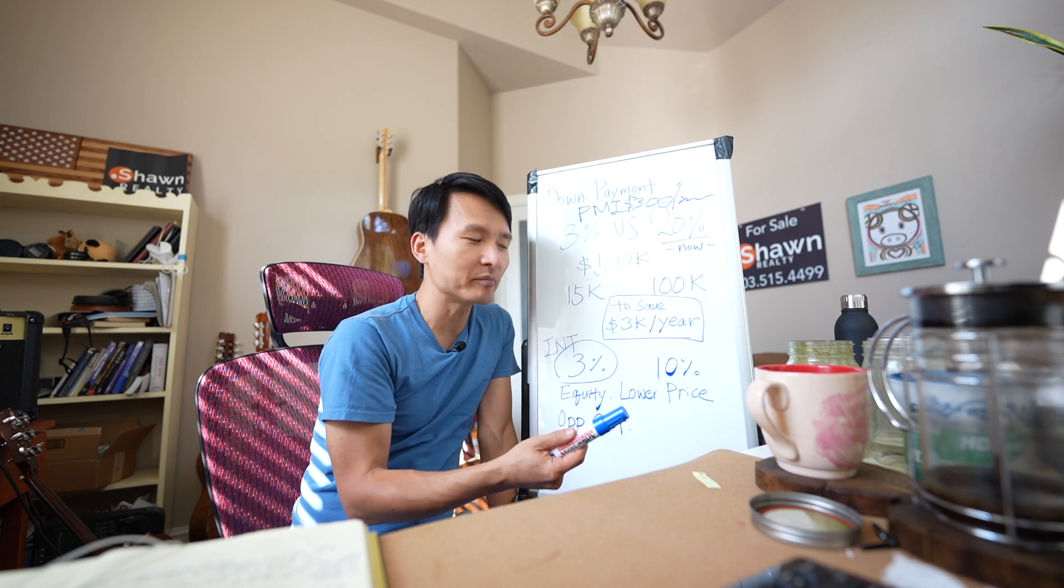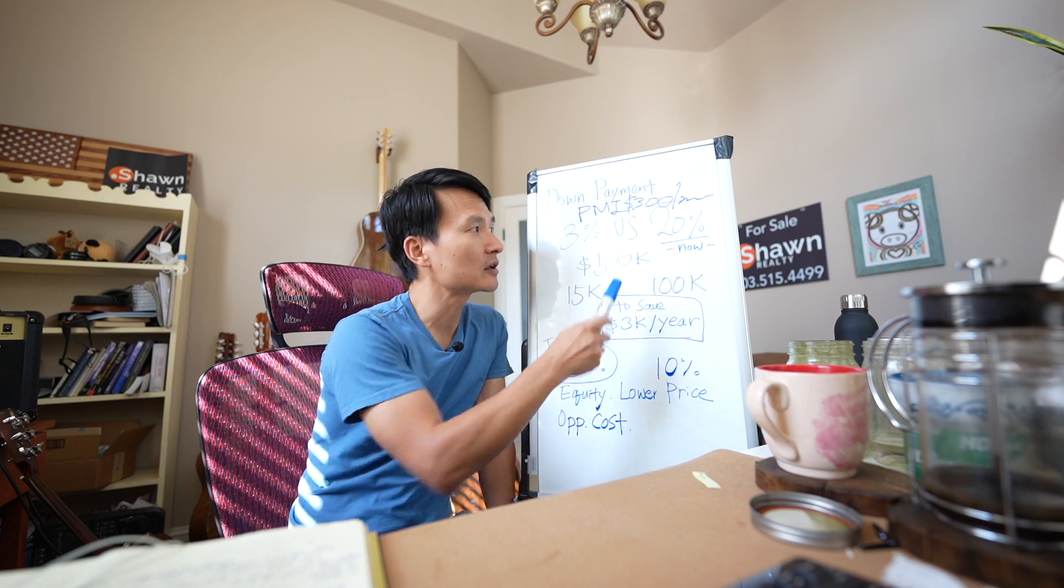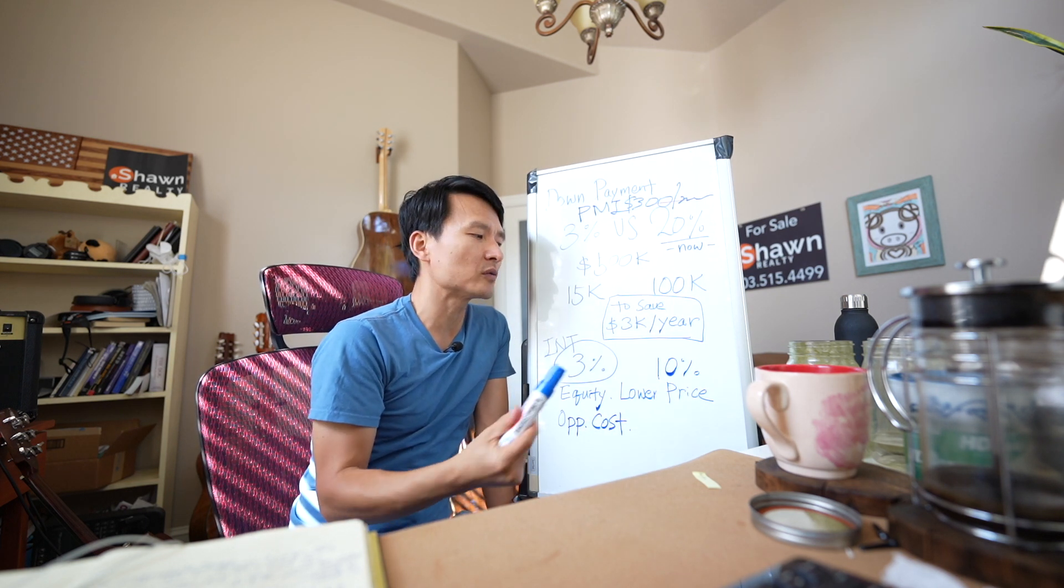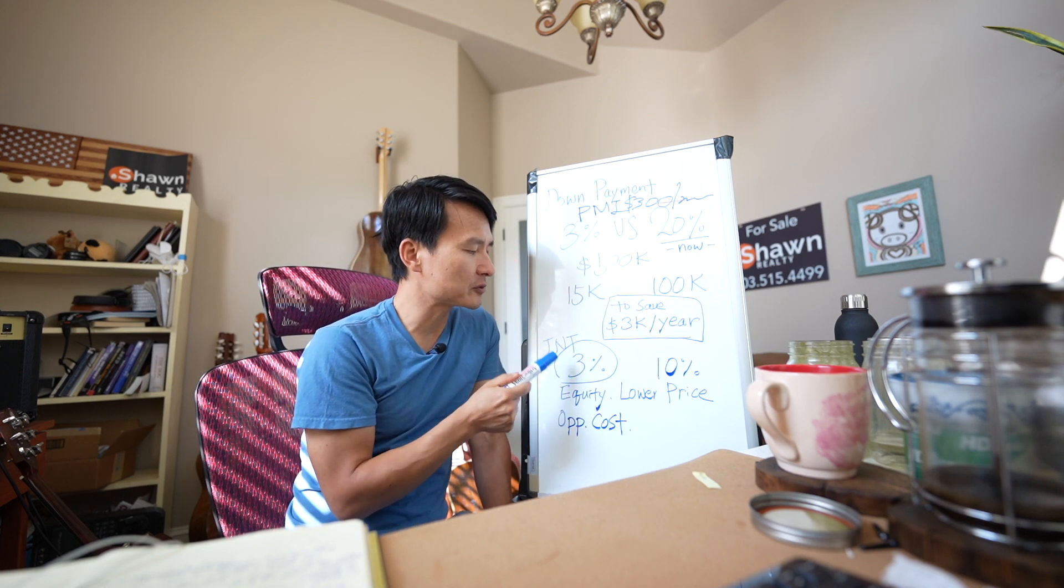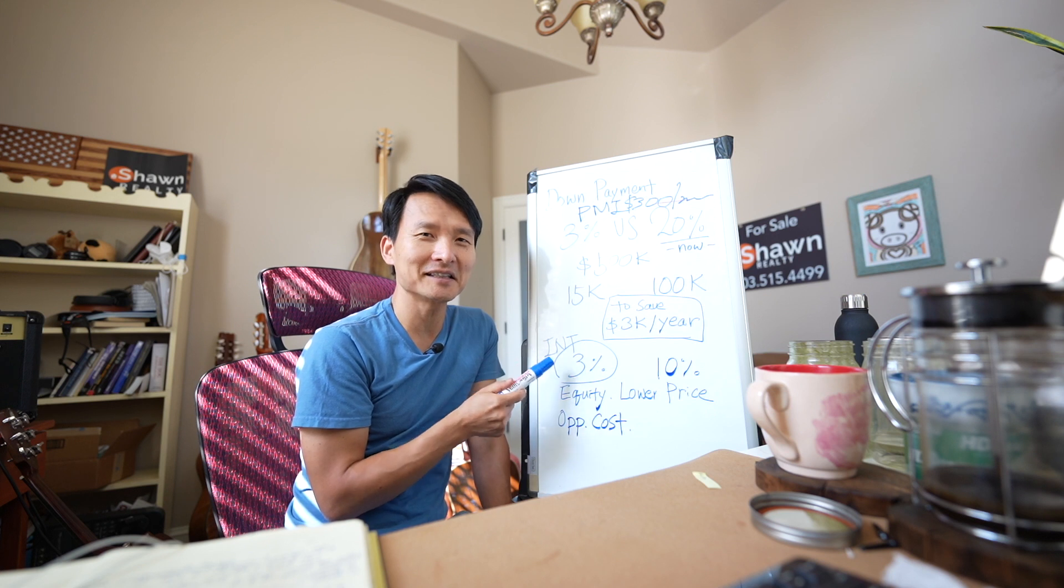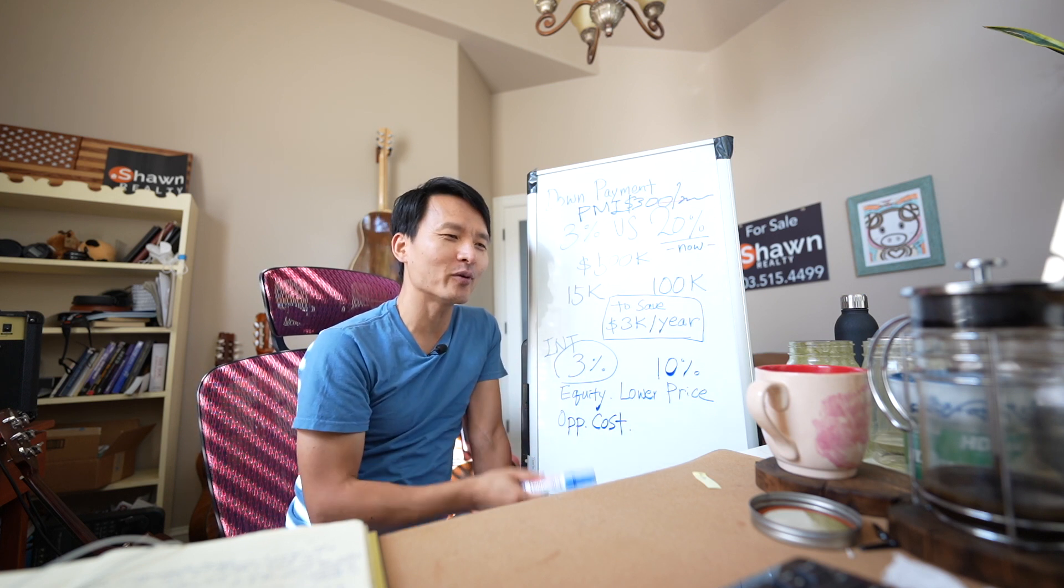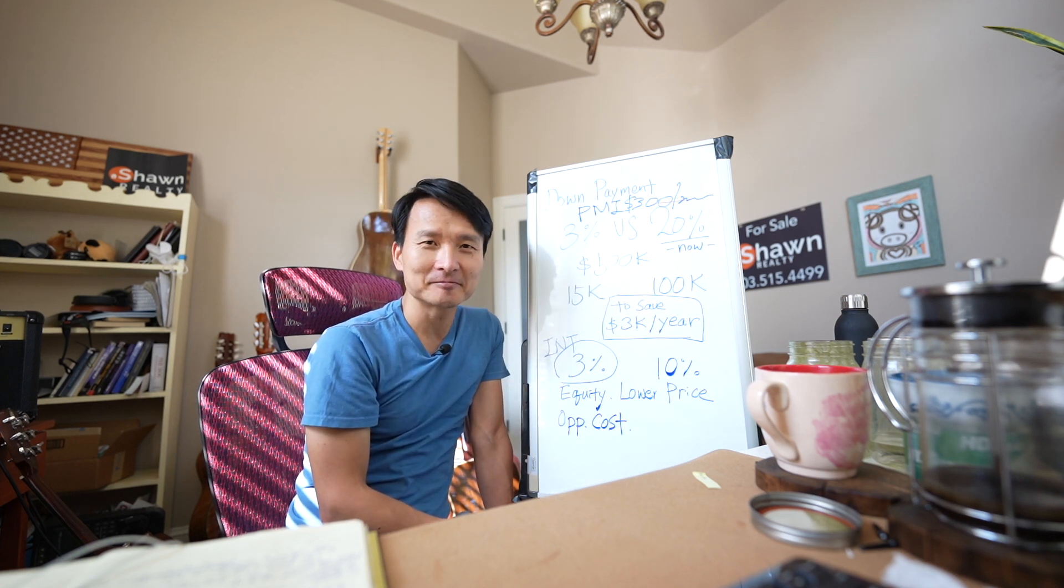When the interest rate is really high, like 10%, yeah, good idea to put down more, close to 20%, to do better in the long run. You don't pay as much interest over time. When the interest rate is so low like these days, that thinking, that theory of put down more toward down payment to avoid PMI, that is not good.